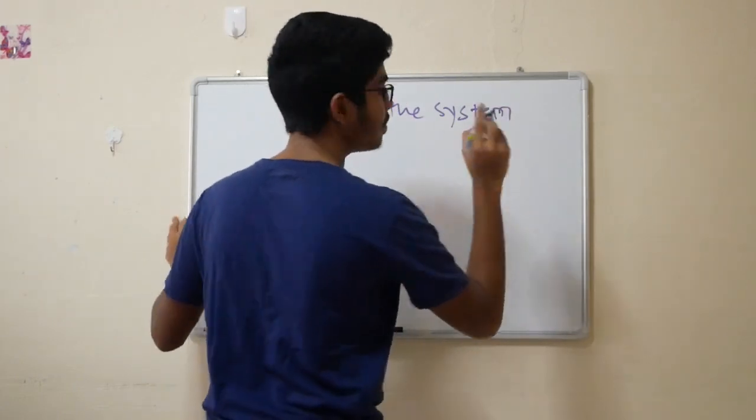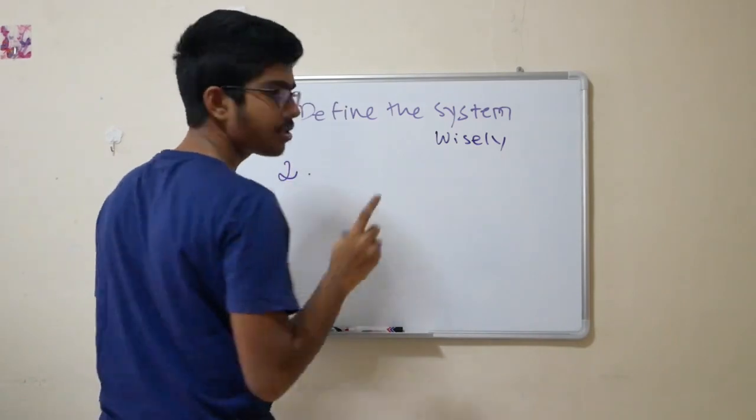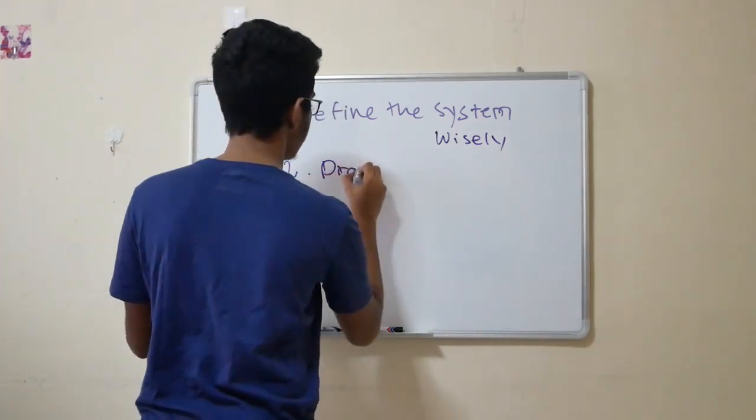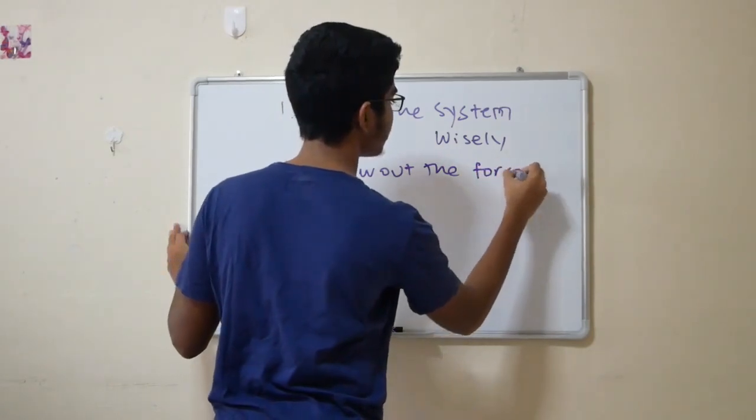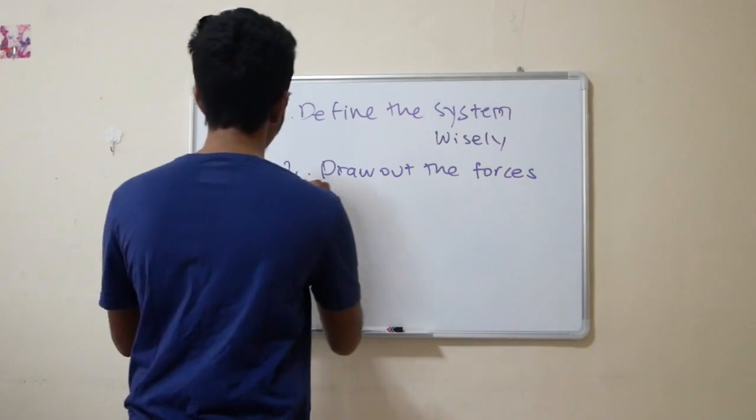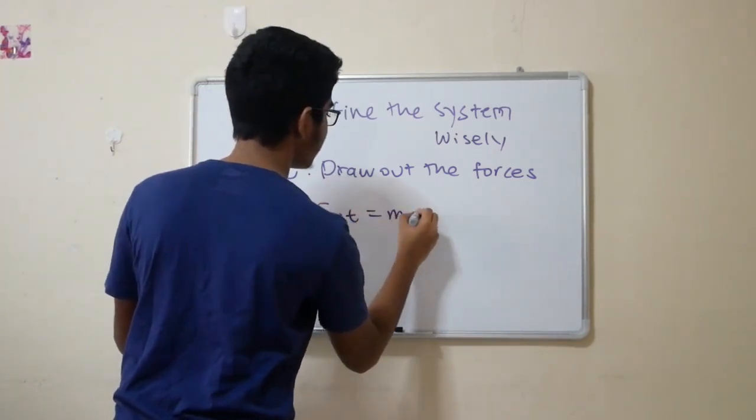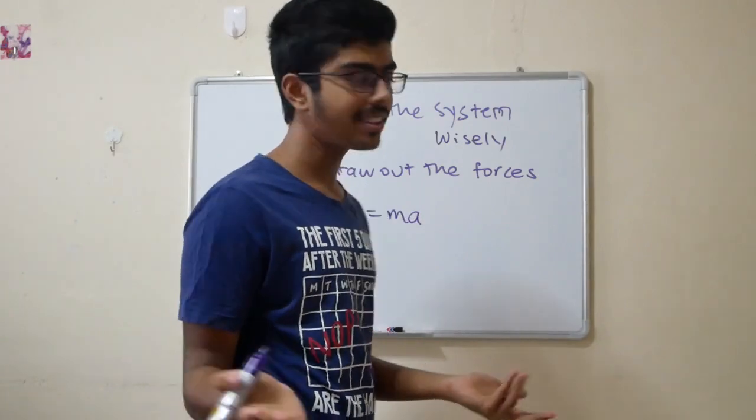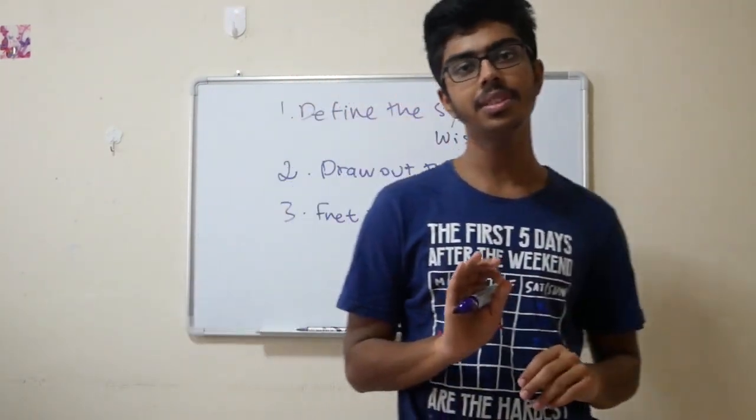Define the system, not just define, define the system wisely. Number two is to draw the forces. This one I think is very simple. Gravitational force, the weight, the normal reaction force, the tension, for example. And number three is F net equals to M A. Newton's second law. I will explain how you can apply it through a couple of example questions for you guys.